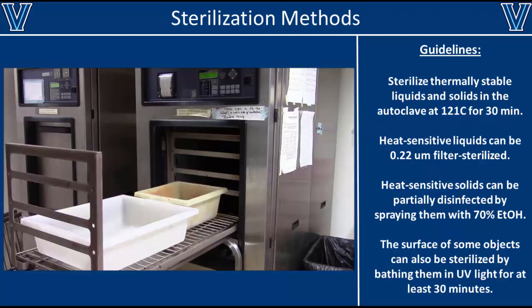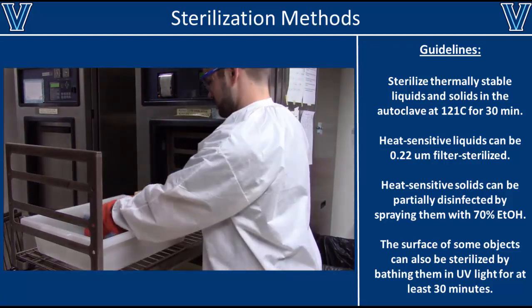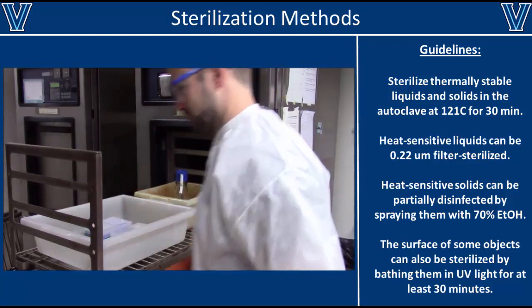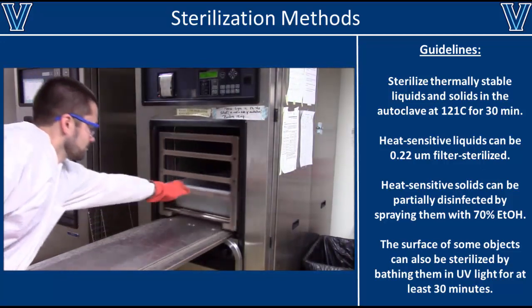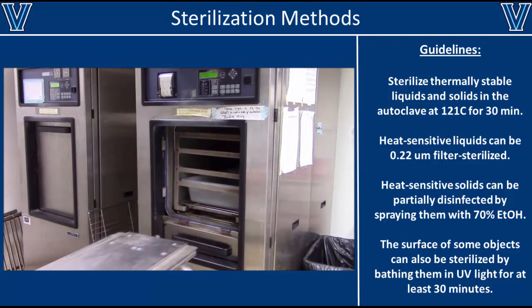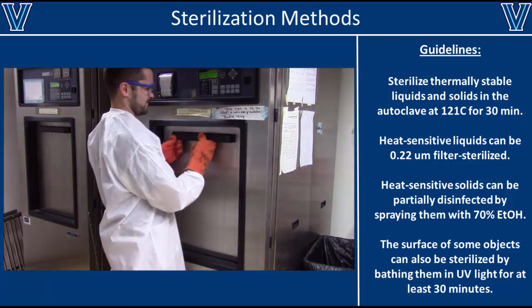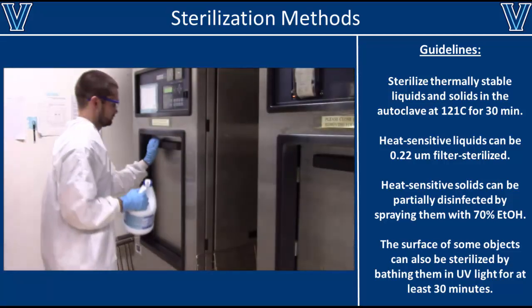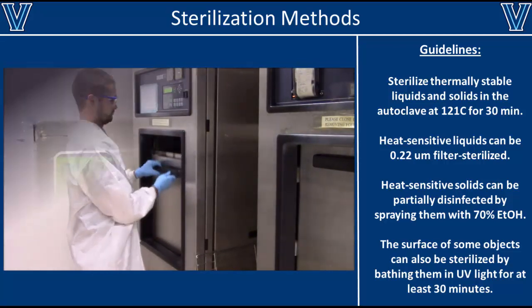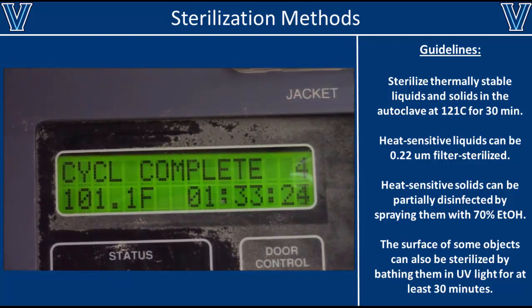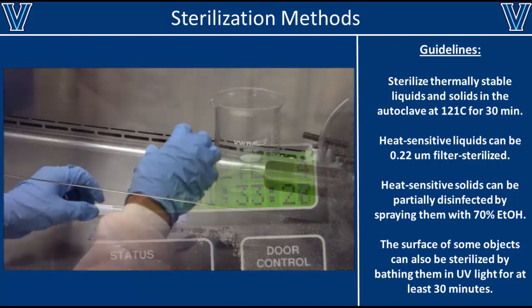Once you've sterilized your gloves, you'll also need to sterilize all the liquid and solid materials you're working with. The most common way to sterilize both liquids and solids is to autoclave them at 121°C for 30 minutes. However, you should never autoclave anything that cannot survive high temperatures — DNA, protein solutions, and some plastics will melt. You should also never autoclave anything containing bleach since it will release toxic vapors, and always let the autoclave cycle fully complete before opening the door.